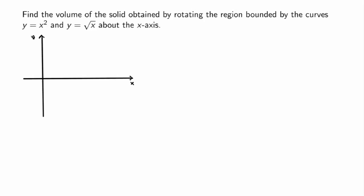Let's work through a typical example. Suppose you want to find the volume of the solid obtained by rotating the region bounded by the curves y equals x squared and y equals the square root of x about the x-axis. The first thing you want to do is sketch the region and figure out what the solid of revolution will look like.